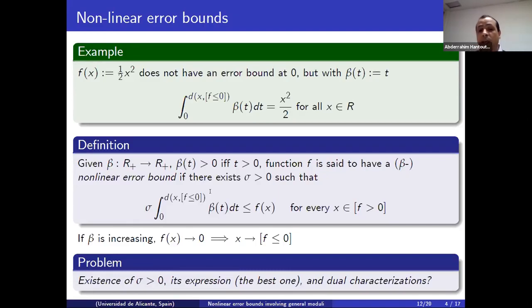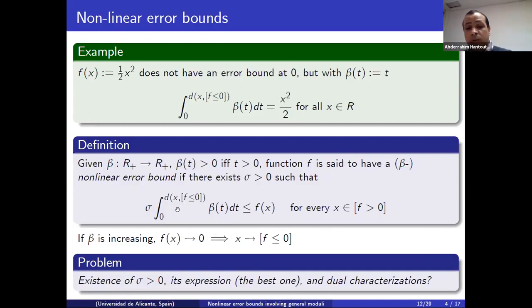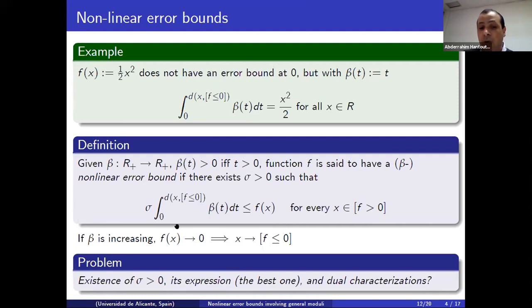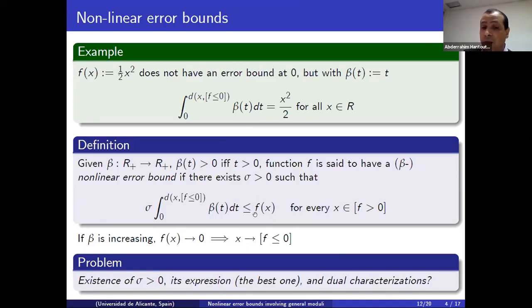There is this same meaning, but for possibly a large family of functions satisfying this error inequality. The question here is: when does such a constant sigma exist, which is equivalent to the existence of an error bound, and if it is possible to give expressions of this sigma — and importantly, to give a dual version of this inequality involving dual concepts or relying on the subdifferential.